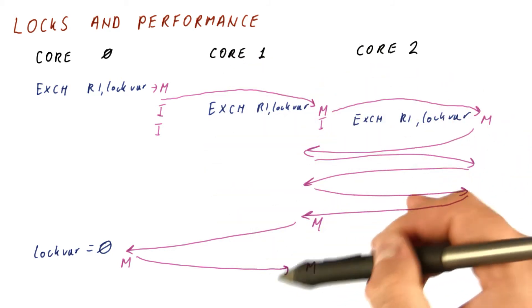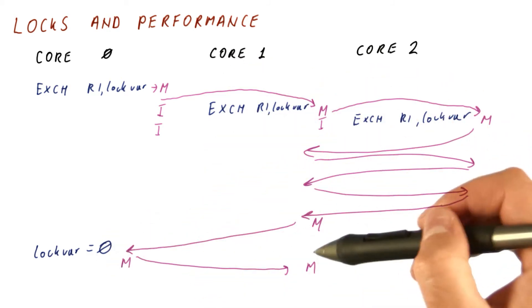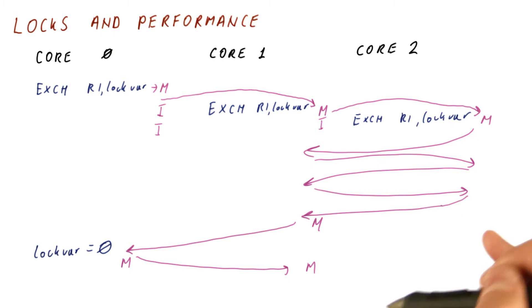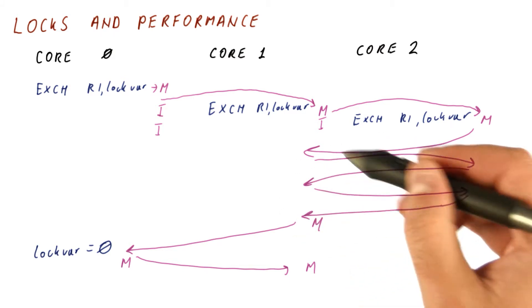So if core one now succeeds in grabbing the lock after it became available, core two continues this activity further. So there is a lot of this going on as long as anybody is waiting on a lock.